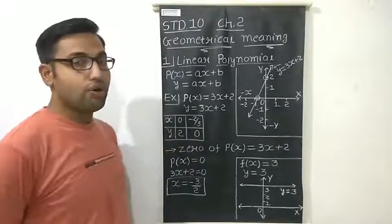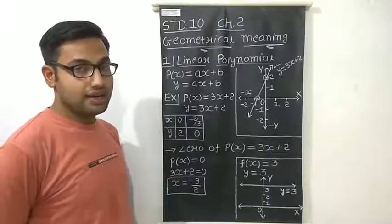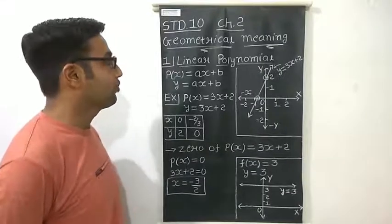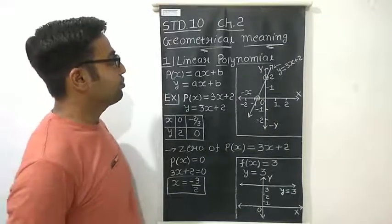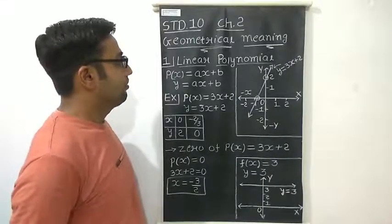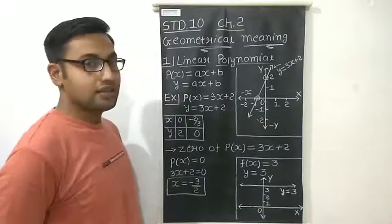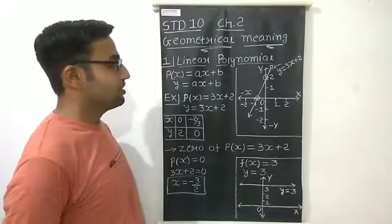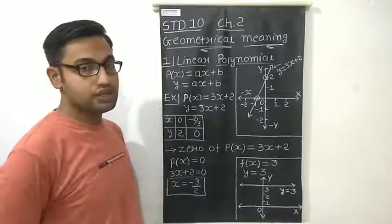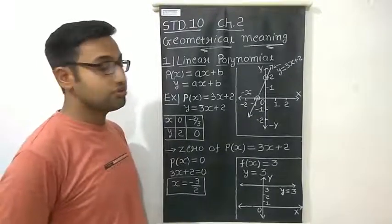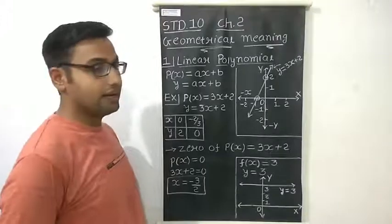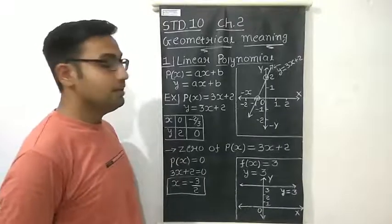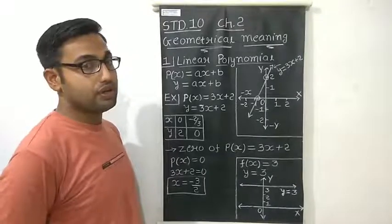This is a topic of standard 10, chapter number 2, polynomials. In the last class, we studied that there are basically three types of polynomials in standard 10: linear polynomial, quadratic polynomial, and cubic polynomial.